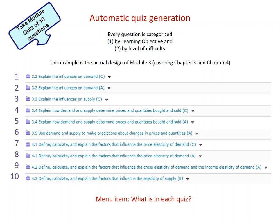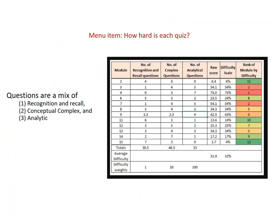There's a menu item that says 'what is in each quiz' — I advise you to look at that, as every single learning objective is spelled out. There's also another menu item visible at all times called 'how hard is each quiz.' Questions are a mix of R's, which are recognition and recall; C's, which are conceptually complex questions; and A's, which are analytic questions.